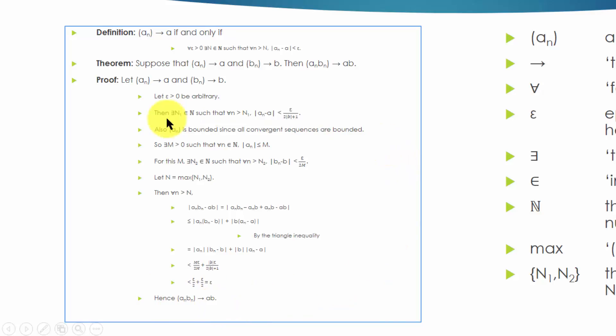The note might look like a jumble of symbols and words, but it can be read aloud like any other sentences. Let's try it. Definition: A sequence A-N converges to A if, and only if, for every number epsilon greater than 0, there exists a natural number big N, such that for every number small n greater than big N, the absolute value of A-N minus A is less than epsilon.